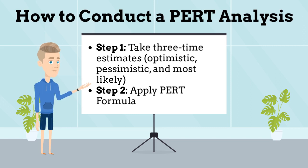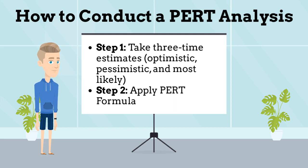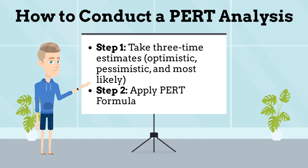How do you conduct a PERT analysis? There are two main steps associated with conducting a PERT analysis. Step 1, you need to take three time estimates for every task along the critical path. These three estimates are based on optimistic, pessimistic, and most likely time to complete the task.